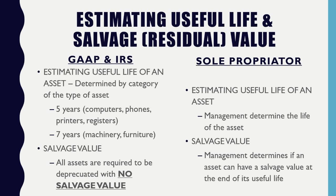That's where we look to GAAP and the IRS. The government already determines your estimated useful life. They have something similar to a Kelley Blue Book for cars — a book that determines the value and life of your fixed asset. The rule is 5, 7, 9, and 11 years. For our purposes, we focus on 5 and 7 since those are the most common.